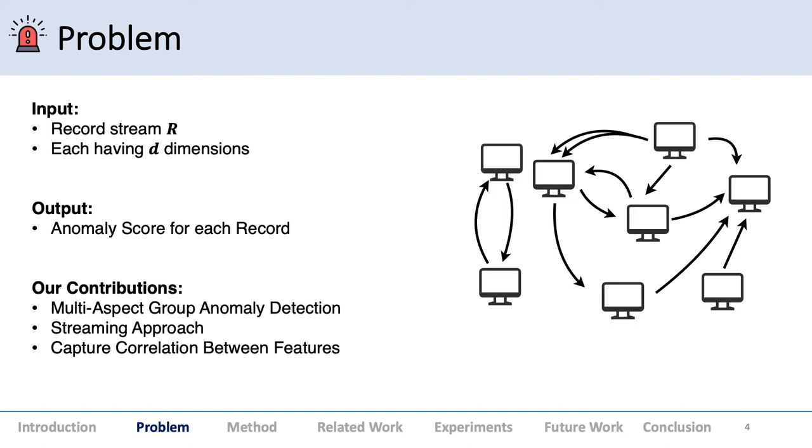The contributions for this work are: we can do multi-aspect group anomaly detection where the data is multi-aspect and anomalies are in group form. It's a streaming approach with constant memory and constant update time with respect to both stream length and number of dimensions. Also, M-STREAM can capture correlation between features, which I'll discuss in a few slides.